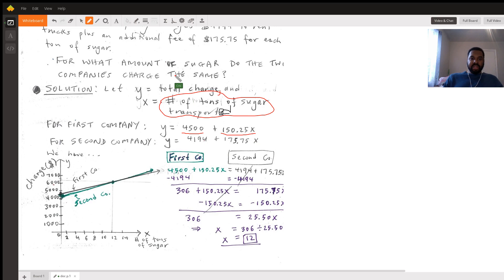The second company charges an initial fee of $4,194 and then $175.75 per ton of sugar. So here we have the situation.